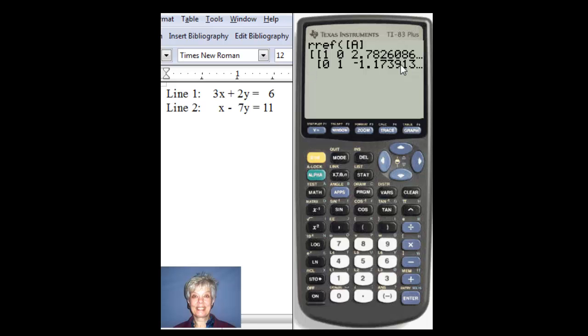So, I am going to math frac this by pushing the math button. And then, since frac is already highlighted, I'm going to hit enter and enter again. And there are my answers. X equals 64 over 23 and Y equals negative 27 over 23.